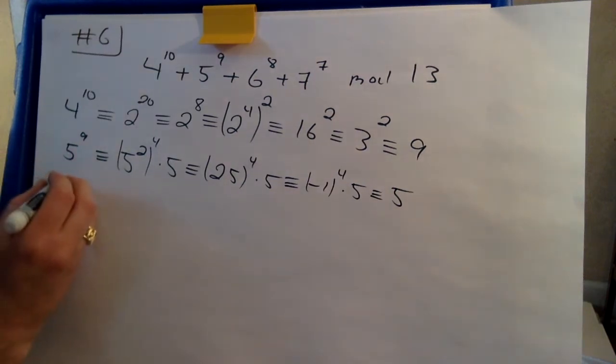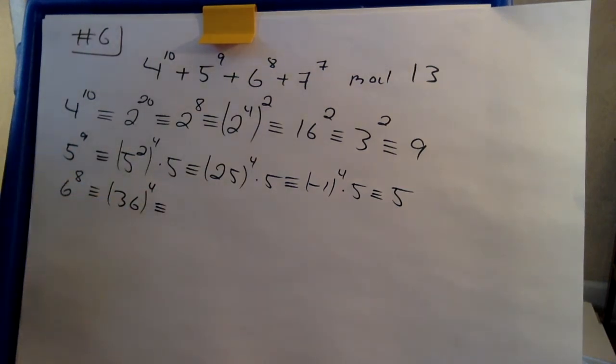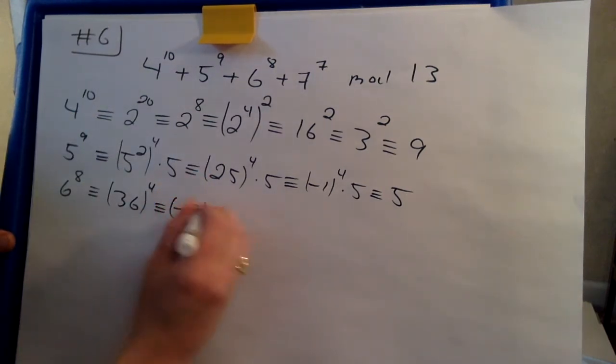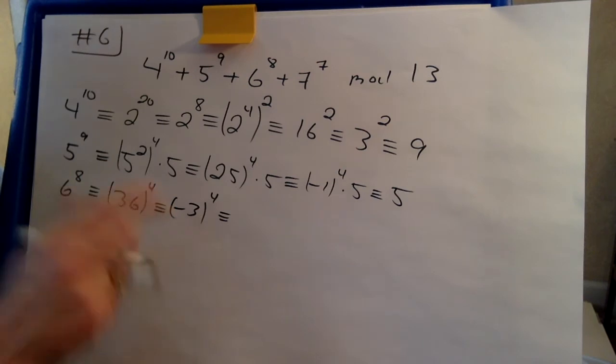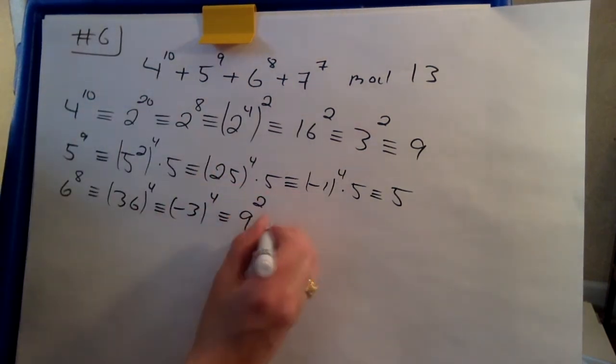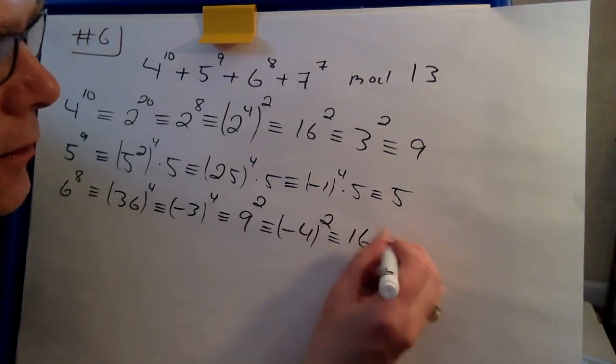Then we have 6 to the 8. Well, we can rewrite this as 36 to the 4th power. 36, well that's 3 less than 39 in modulus 13. So we have minus 3 to the power of 4. Minus 3 squared, the same as 3 squared is 9. So this is 9 squared. 9 is negative 4. I try to avoid minus 4. So we have minus 4 squared. Well, you know that's 16, which is 3.